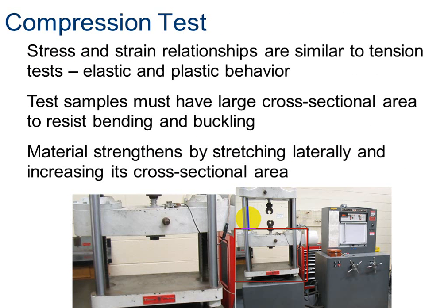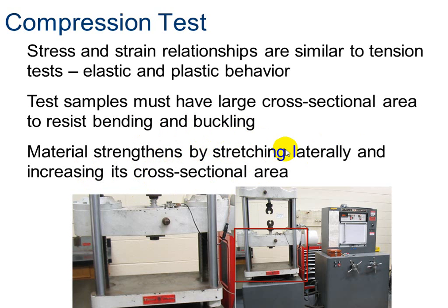That's it for tensile testing. Now we'll briefly talk about the other two tests. Compression testing — the stress and strain relationships are similar to tension, but it uses a large cross-sectional area to resist bending and buckling. Instead of pulling the material apart, we're pushing it together, applying force and pressure. The material strengthens by stretching laterally and increasing its cross-sectional area.